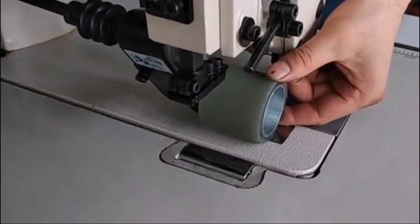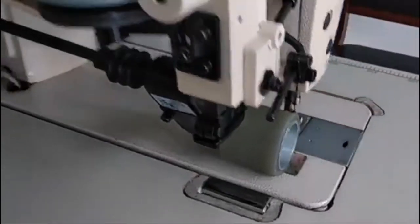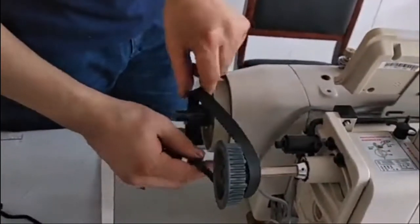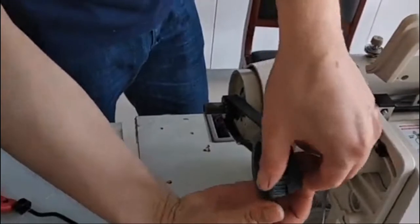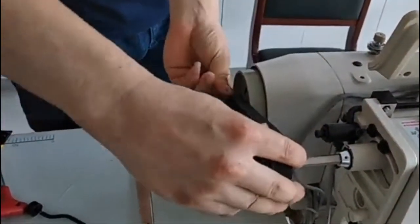Turn the handrail of the machine, then turn the handrail of the puller. Another hand is touching the puller. When the puller just starts to move, stop it.